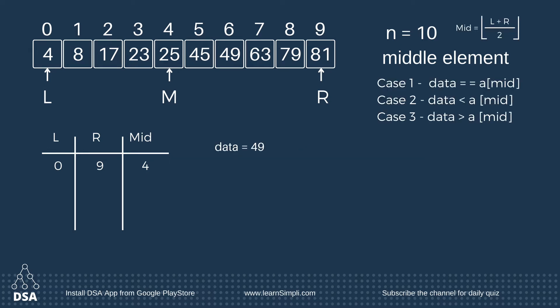The data to be found is 49. Checking the cases, it falls in the third case, as the data value is greater than the middle value — that is, 49 is greater than 25. So we can say that the data is present in the right subarray.